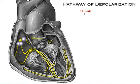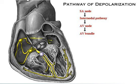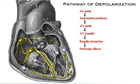The SA node initiates the depolarization impulse, which in turn generates an action potential that spreads throughout the atria to the AV node. Here, the impulse is delayed briefly before continuing onto the ventricles through the AV bundle, bundle branches, and Purkinje fibers.